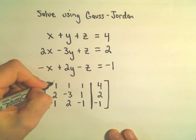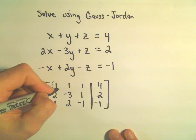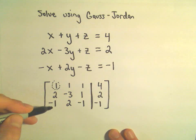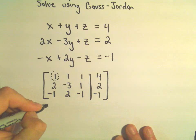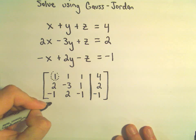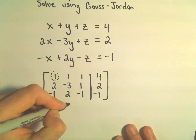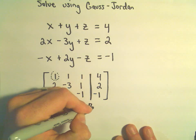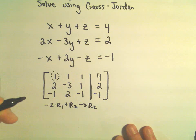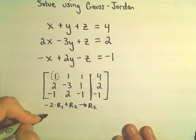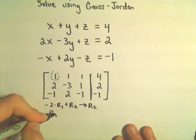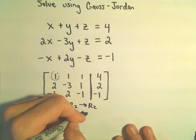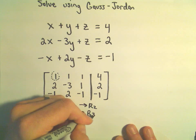We want to get a 1 in the top left, which we already have, so I'm going to try to get zeros everywhere else. To do that, I'm going to take negative 2 times row 1 and add that to row 2 to get my new row 2. And then I'm going to take row 1 and add it to row 3 to get my new row 3.